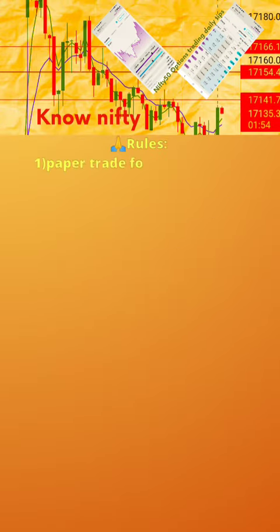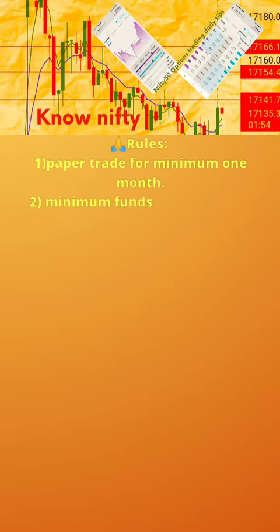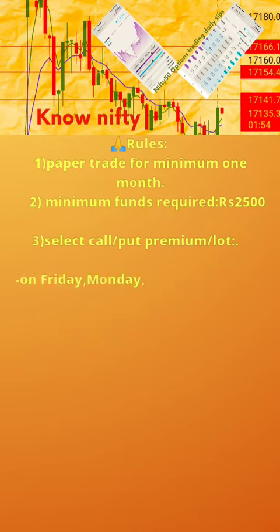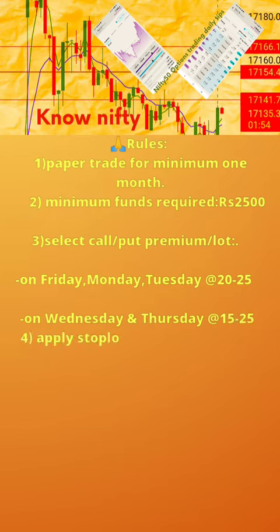Please follow the 7 rules below. Rule 1: paper trade for minimum 1 month. Rule 2: minimum funds required — 2500 rupees. Rule 3: select call or put premium per lot — on Friday, Monday, Tuesday at the rate of 20–25; on Wednesday and Thursday at the rate of 15–25.